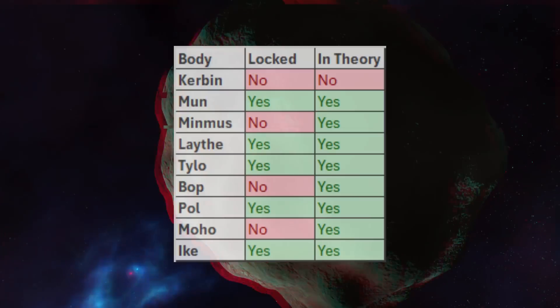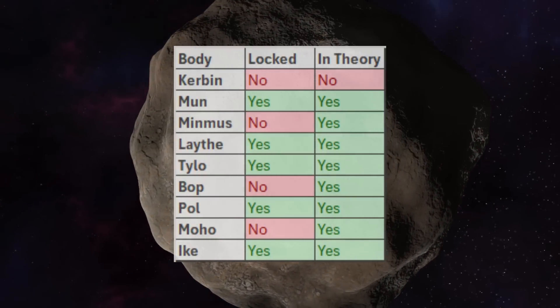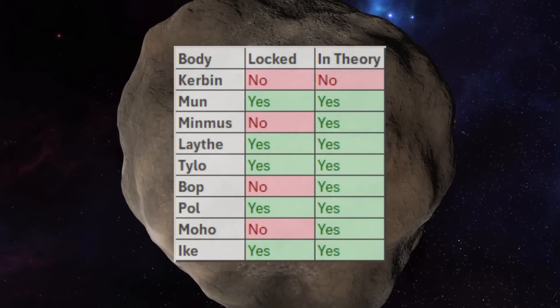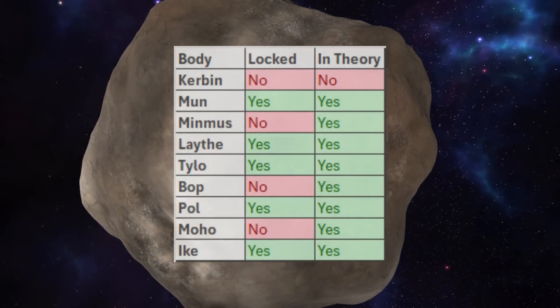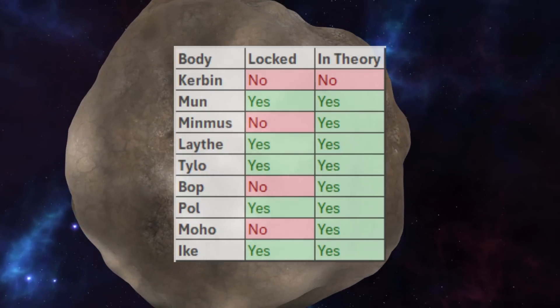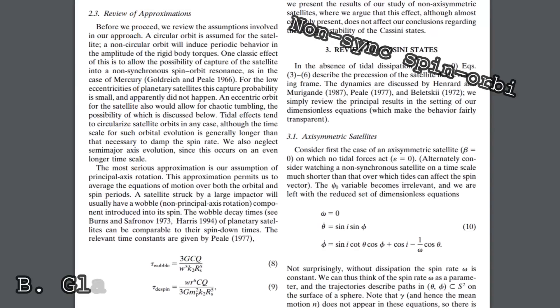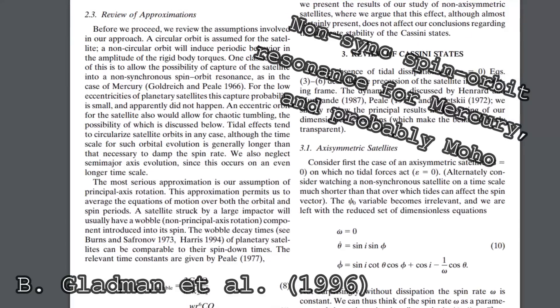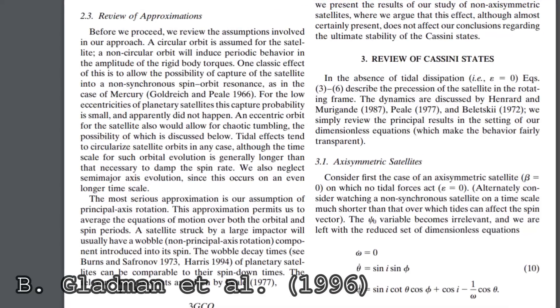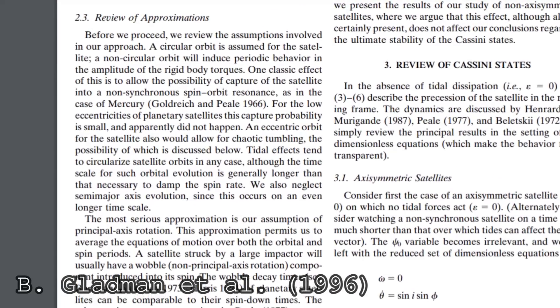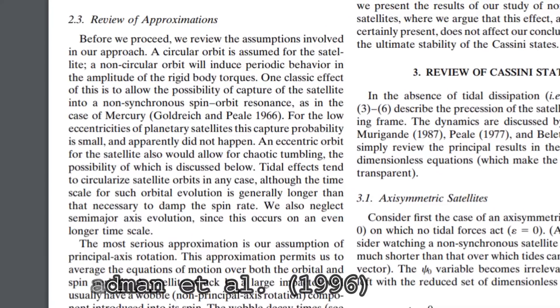Besides Minmus, Bob and Moho are also not tidally locked, while they should be according to the equation. And the reason for these bodies to not be tidally locked could be due to something called non-synchronous spin orbit resonances or chaotic tumbling. And you can read more about it in this paper or something.